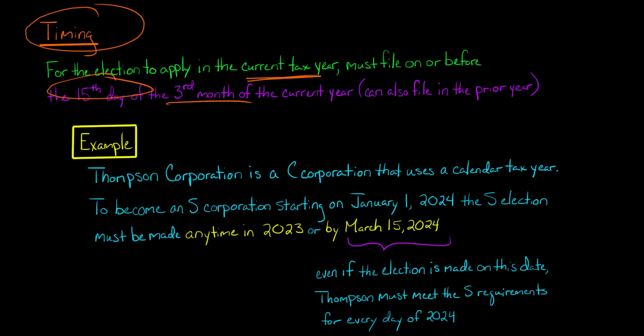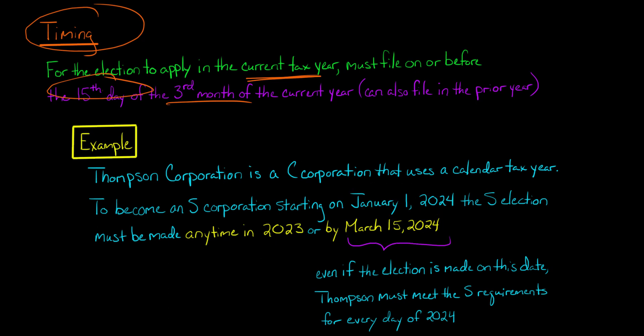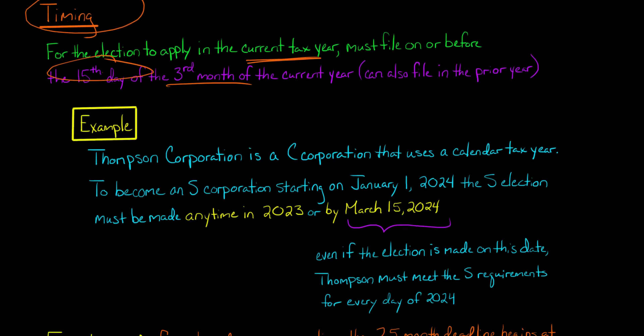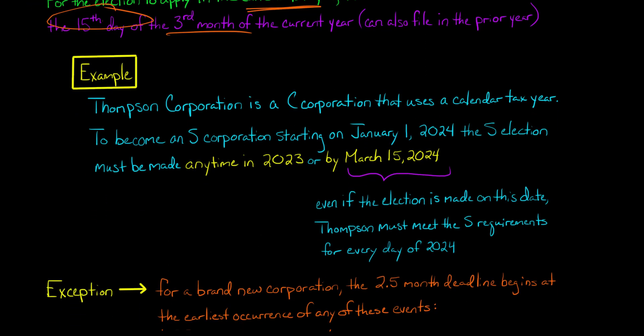If they wait and file on March 15th saying they want to be an S-Corporation as of January 1st, 2024, they need to meet the requirements of being an S-Corporation for every single day of 2024.